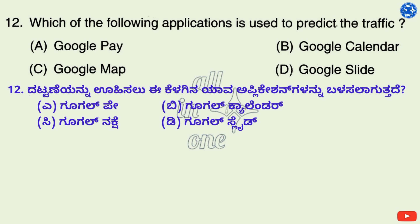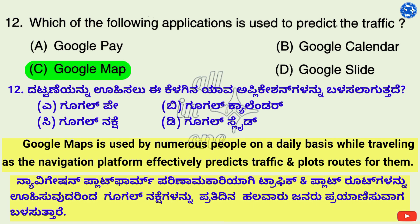Question 12. Which of the following applications is used to predict traffic? Options: A. Google Pay, B. Google Calendar, C. Google Map, D. Google Slide. Right answer is C: Google Map. Google Maps is used by numerous people on a daily basis while traveling, as the navigation platform effectively predicts traffic and plots routes for them.